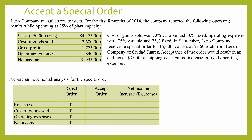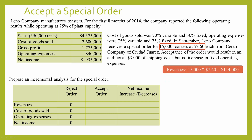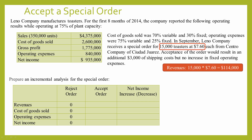Now we can look at whether or not they should accept the order. The order is for 15,000 toasters at $7.60 each. We multiply those together to get total revenues of $114,000. Since revenues increase from zero (if rejected) to $114,000 (if accepted), this is a positive number in our net income column.